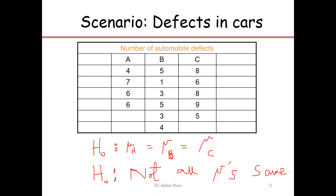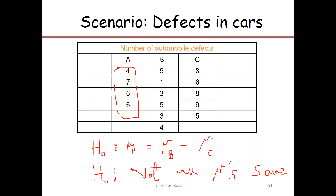The number of defects between models is a known source of variation, while the number of defects within a model is an unknown source. The variation within model A is unknown because if the same machine is producing all four cars, why would there be different numbers of defects? This is called unknown variation. The variation between models A, B, and C is known because these are three different companies, and there is a possibility that some companies are making better cars than others — this is what is being tested.